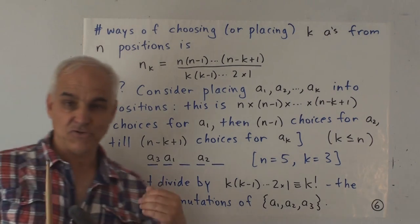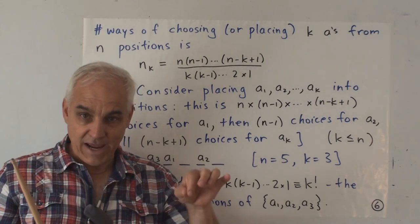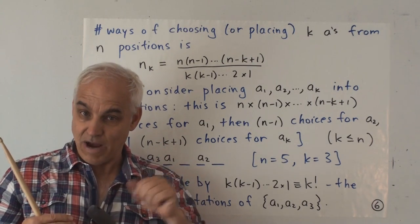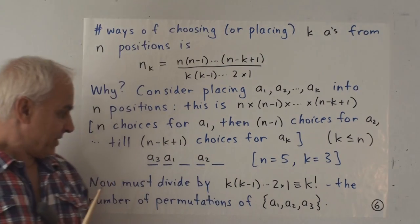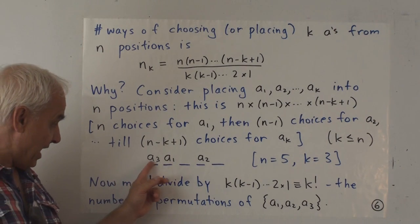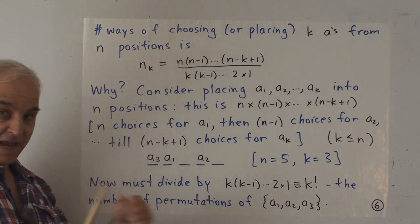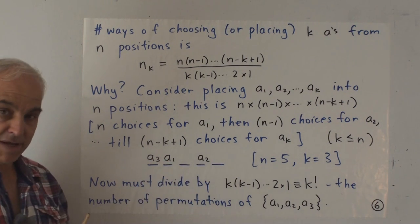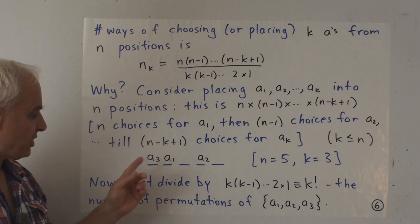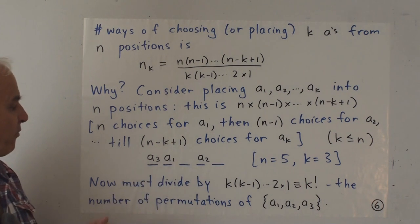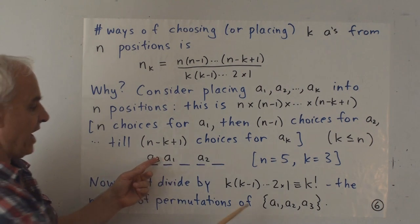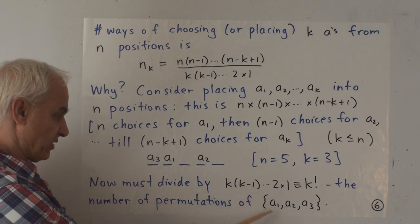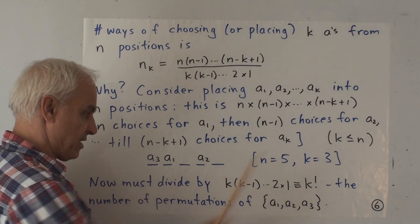Now, ultimately, we're not interested in the number of ways of putting in these ordered a's. We're interested in the number of ways of putting in the unordered a's. So we want to rub out the labels. So we want to compensate for the fact that having an a here, an a here, an a here, can be obtained in a number of different ways. We could have put the a1 here, and then the a2 here, or the a3 here. So in other words, we must divide by the number of permutations of the set a1, a2, a3. And that is k times k minus 1 down to 1, which is k factorial.